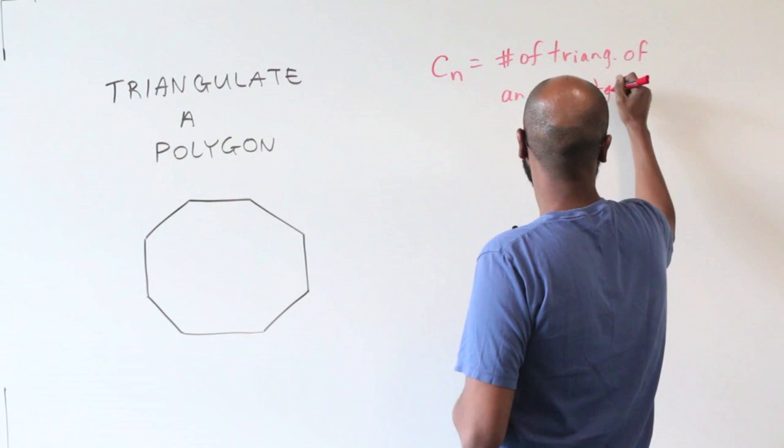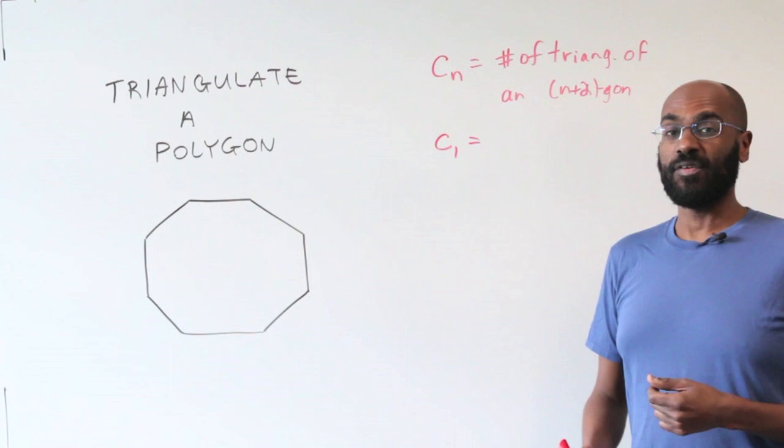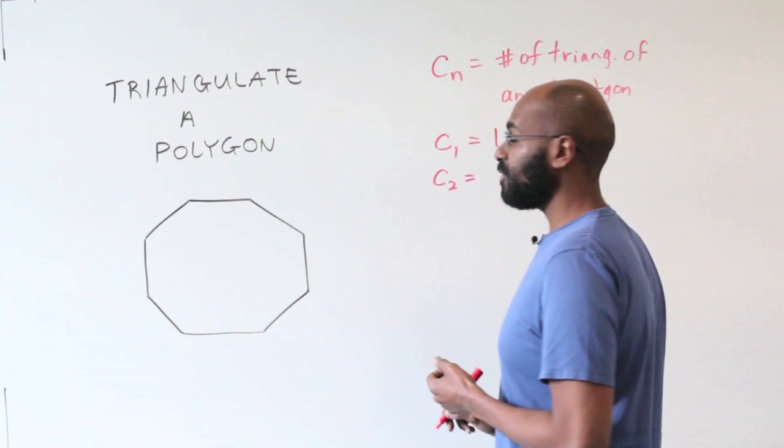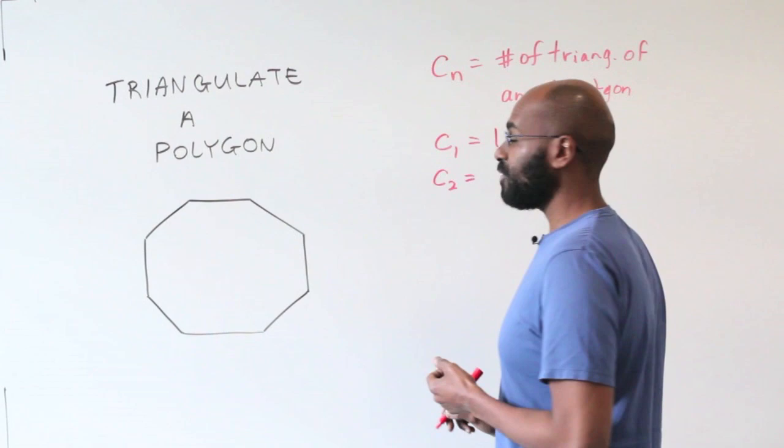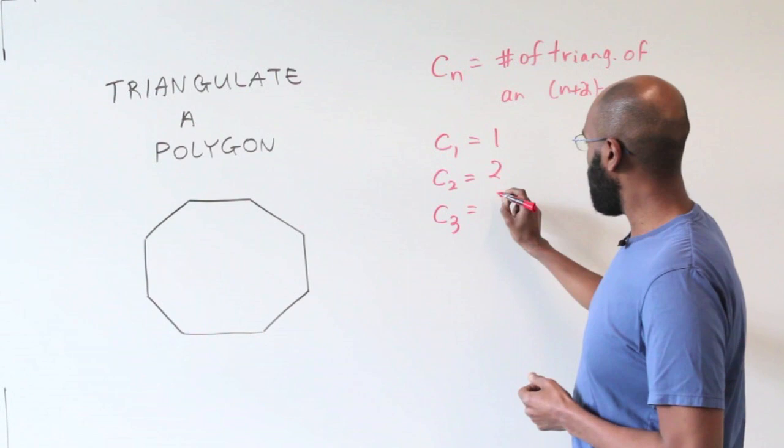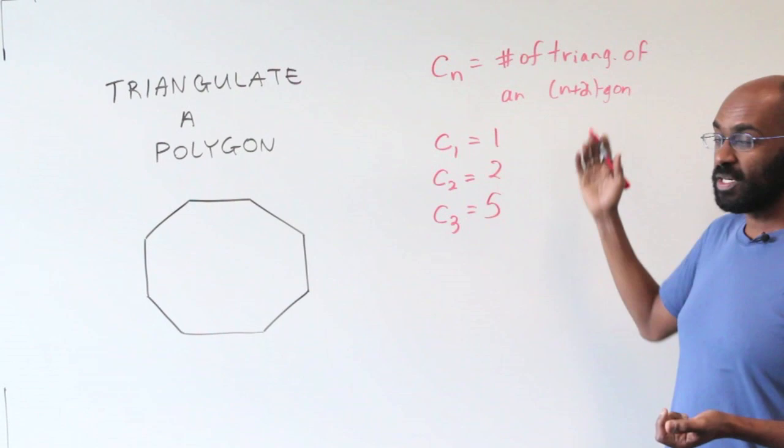So what we'll do is let C_n be the number of triangulations of an (n+2)-gon. For example, C_1 is the number of triangulations of a 3-gon, which is a triangle, and there is one of those. C_2 is the number of triangulations of a 4-gon, or quadrilateral — we saw that there are two of those. And C_3 is the number of triangulations of a 5-gon, which is 5. So here are the first three numbers counting triangulations of polygons with different numbers of sides.